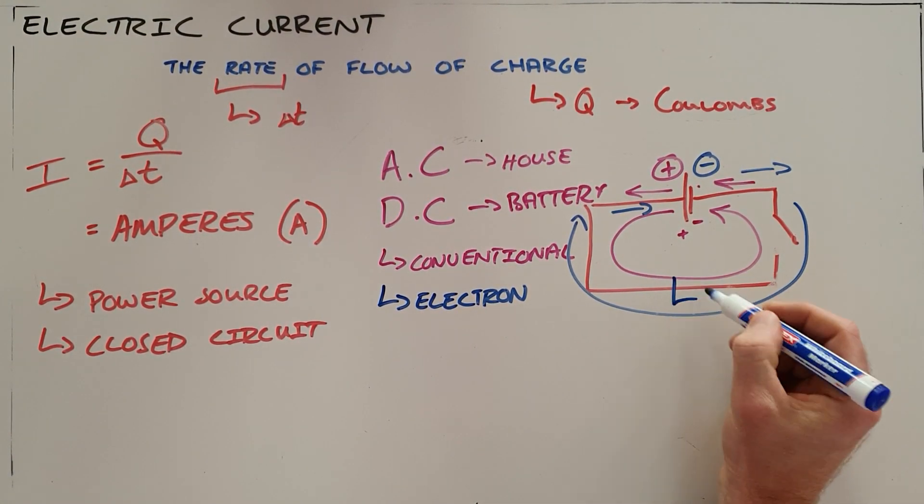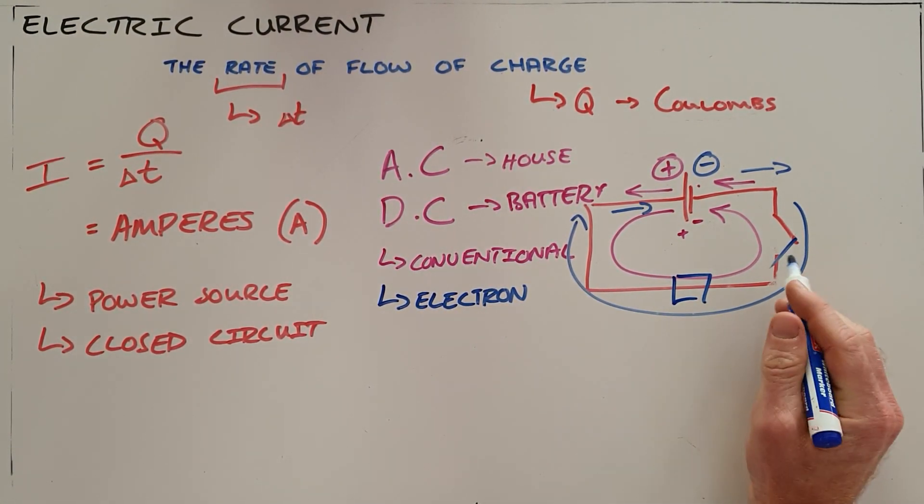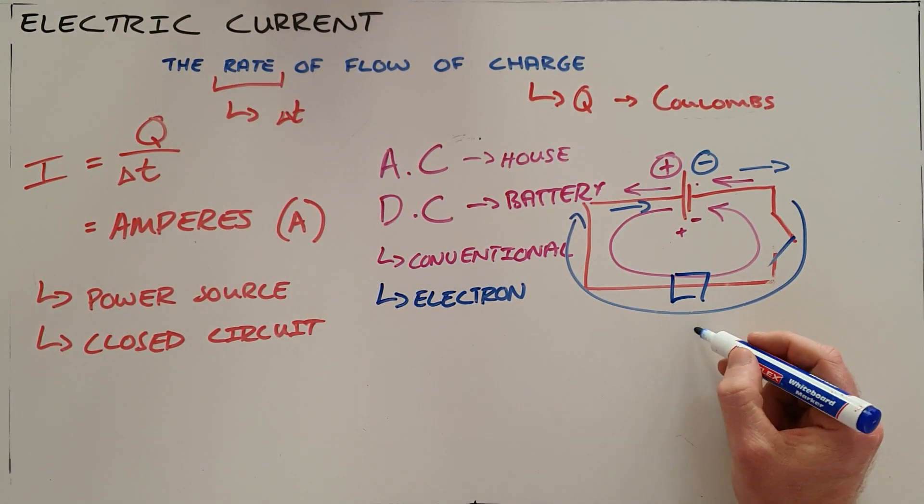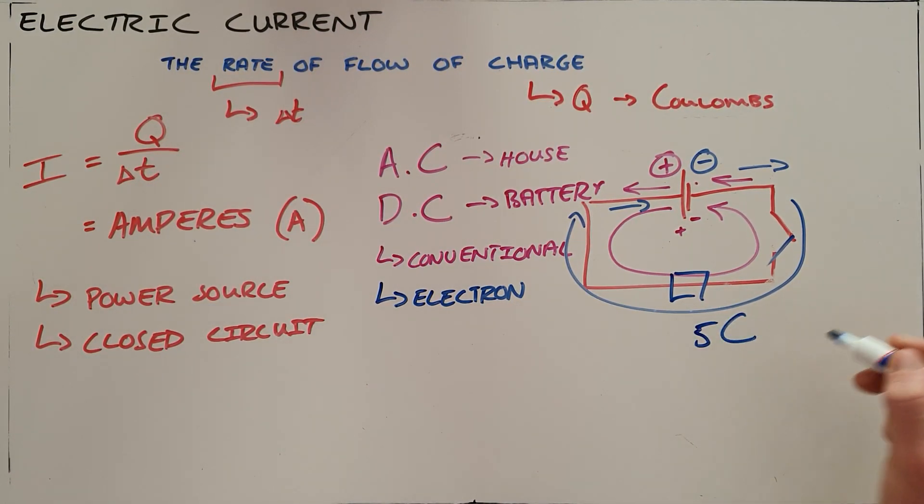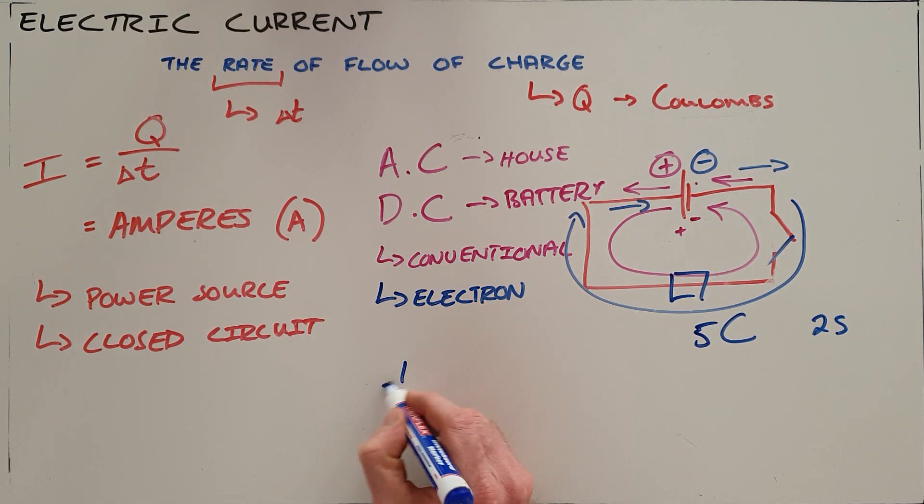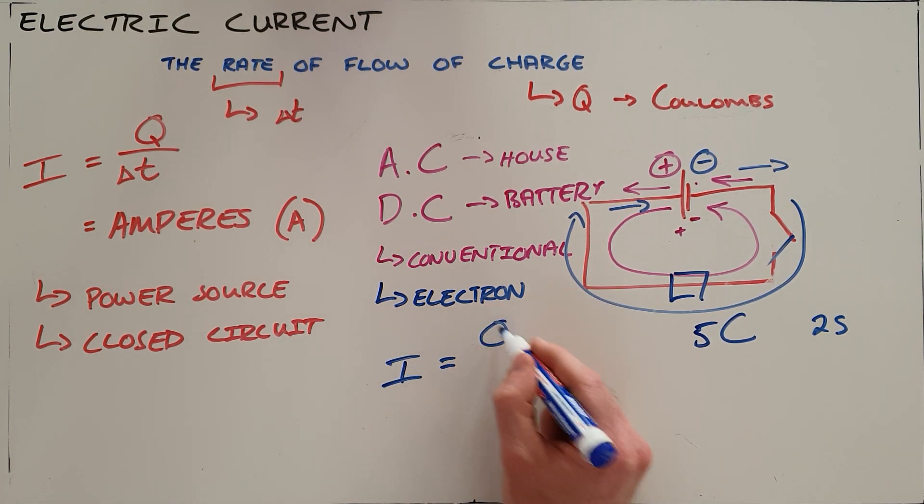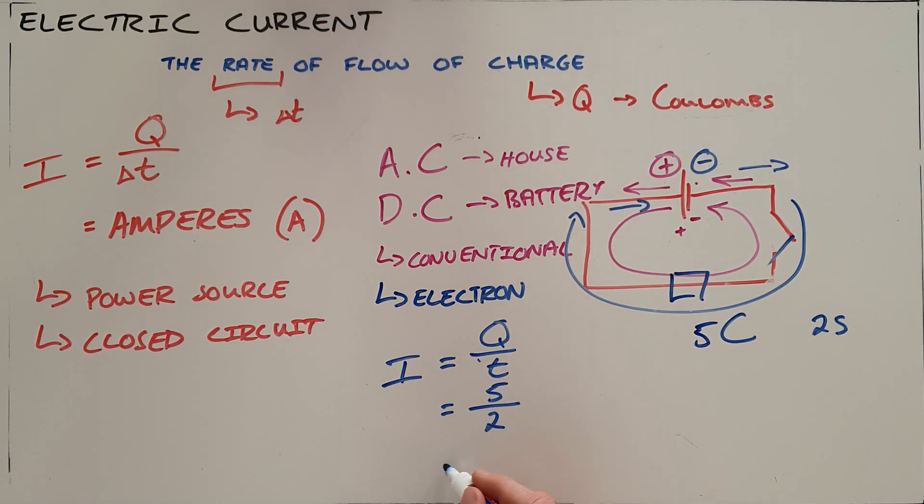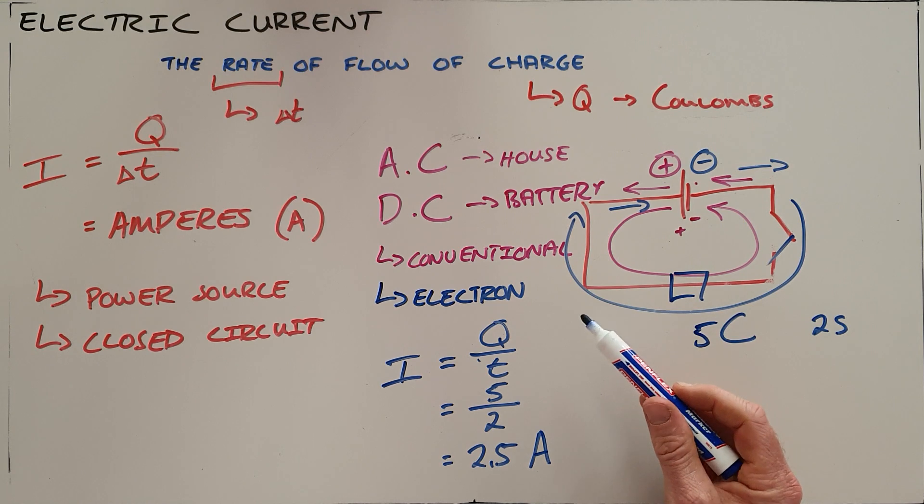A common question for a circuit like this would be: if it is measured that five coulombs of charge passes a specific point in a circuit every two seconds, calculate the current. Current is the rate of flow of charge - five coulombs passing a point in two seconds - which means the current in that circuit is 2.5 amperes, basically saying 2.5 coulombs of charge passes a point every second.